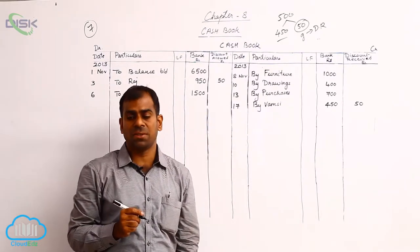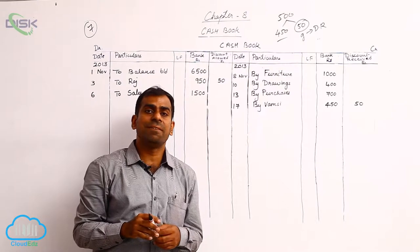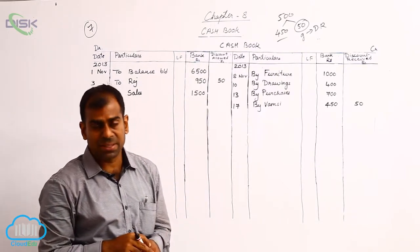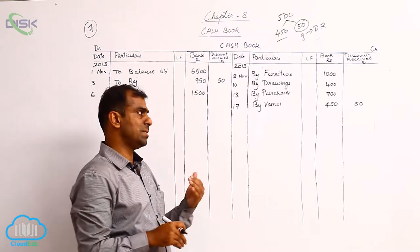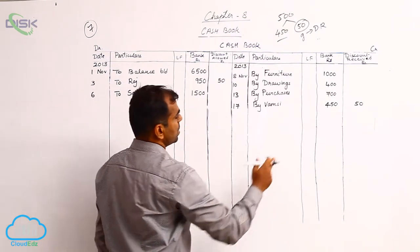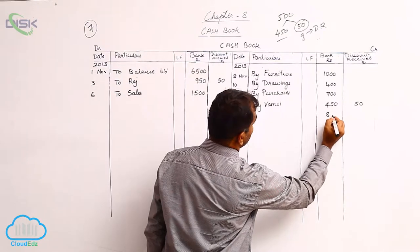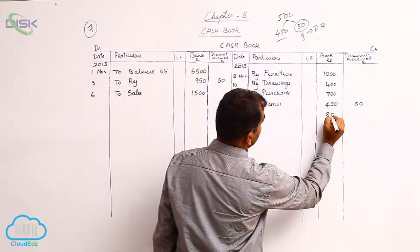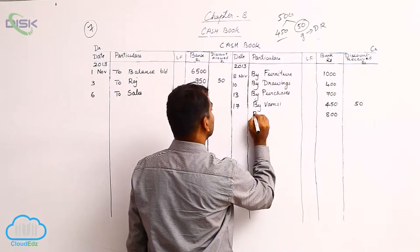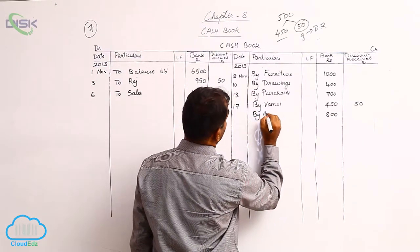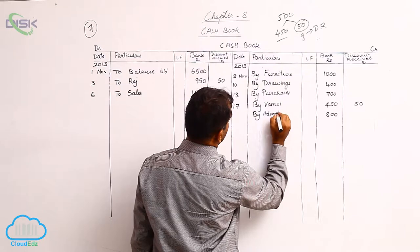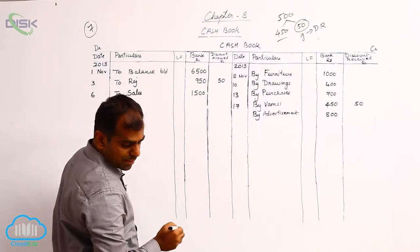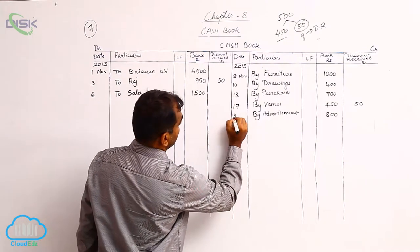The next transaction is on the 21st — advertisement expenses of 800. Money will be paid, so on the credit side enter 800 in the bank column and write 'by advertisement'. Date is the 21st.